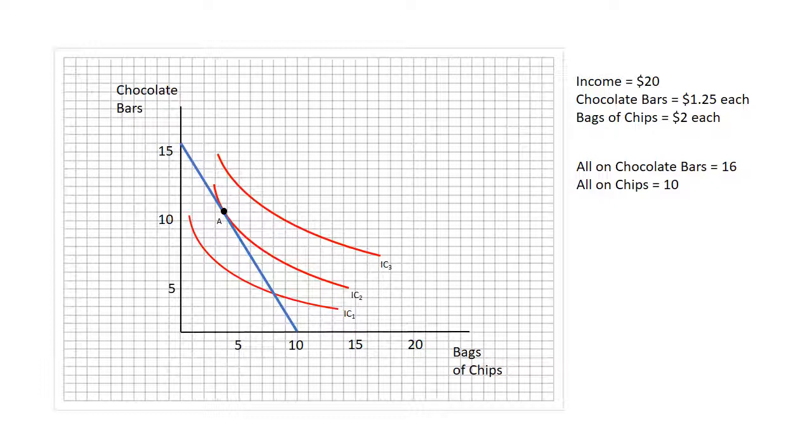Now we're going to imagine that the price of a bag of chips falls—they're now a dollar rather than two dollars a bag. That means that if you spend all of your twenty dollars on chips, you'd be able to buy twenty bags.